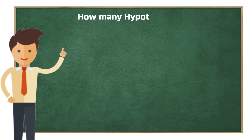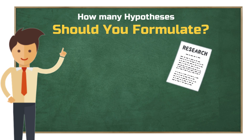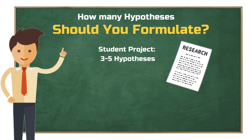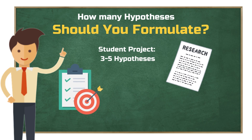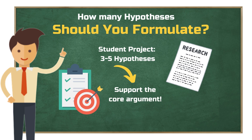How many hypotheses should you formulate? This depends on the complexity and scope of your study. There is no fixed rule, but for a student project, three to five hypotheses are a rough guideline. You should never formulate hypotheses that do not contribute to answering your research question. Carefully consider which hypotheses you need to answer your overarching research question, and only include truly relevant relationships. They should directly support the core argument of your paper.